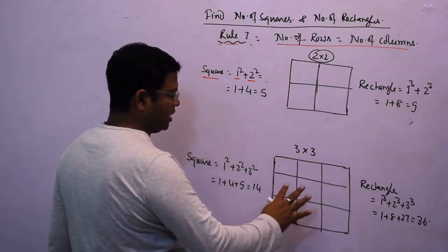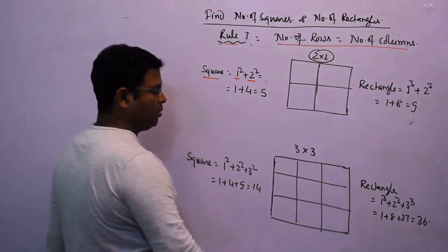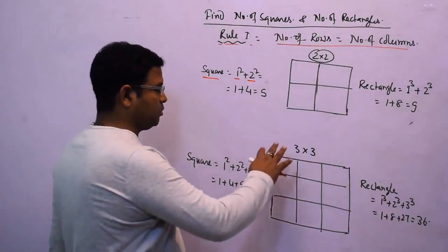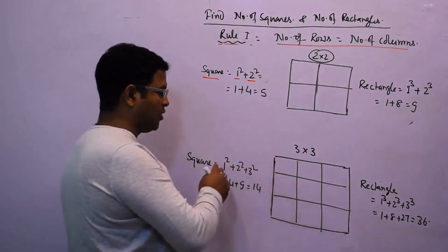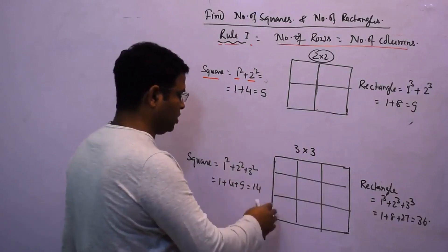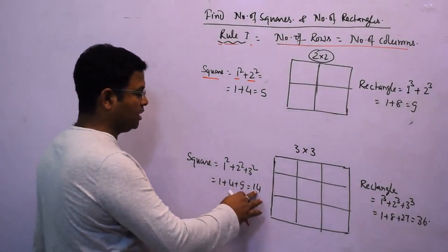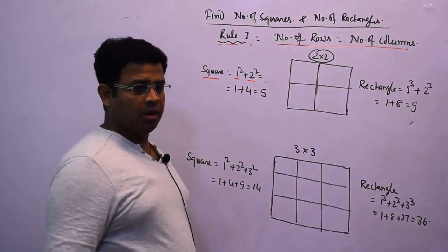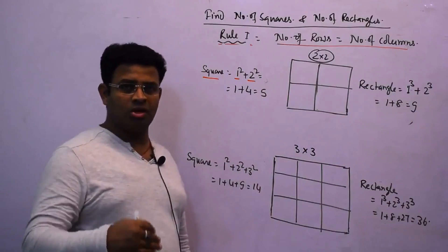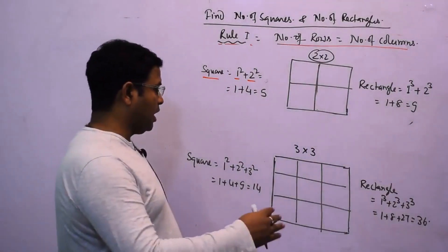For three rows and three columns, to find number of squares: start from 1 and go up to 3, so 1² + 2² + 3² = 1 + 4 + 9 = 14 squares. Similarly, for four rows and four columns: 1² + 2² + 3² + 4² = 30 squares.